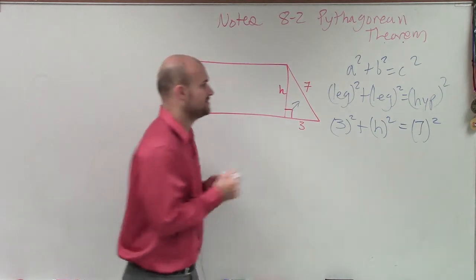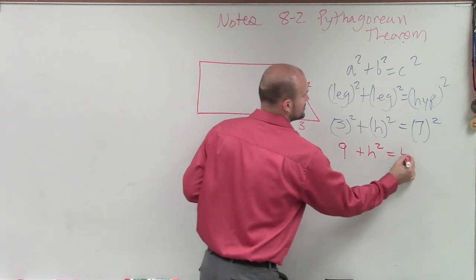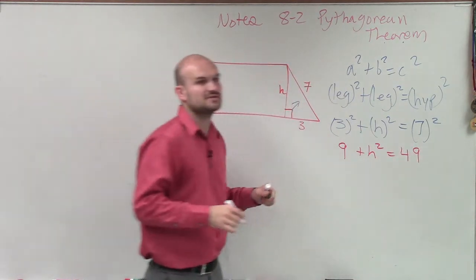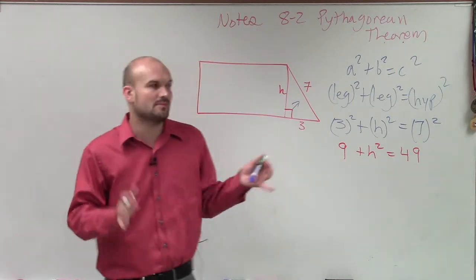All right, so now let's go and see. 3 squared is going to become 9. h squared is just h squared equals 49. 7 times 7 is 49, right? 7 squared. A number squared is 7 times 7, or a number by itself.